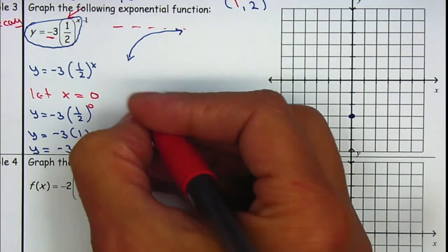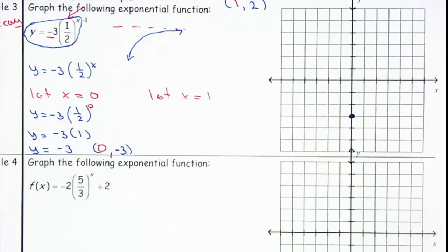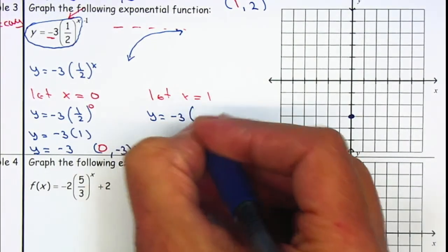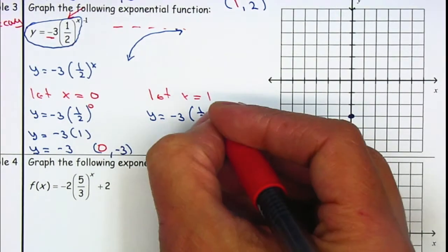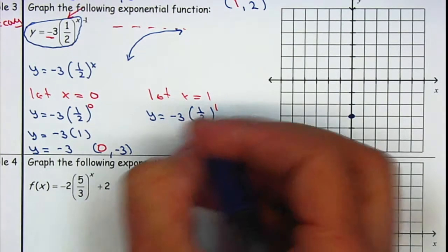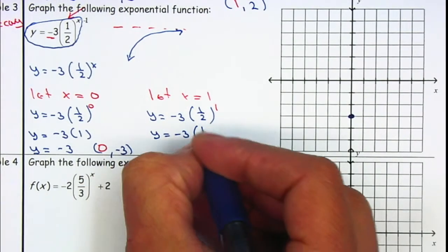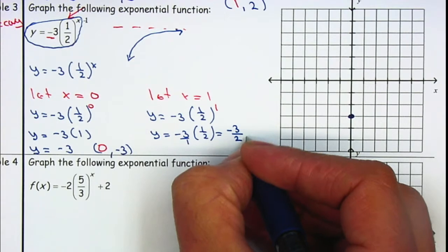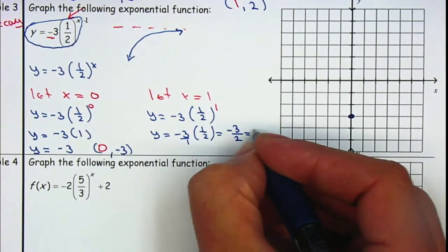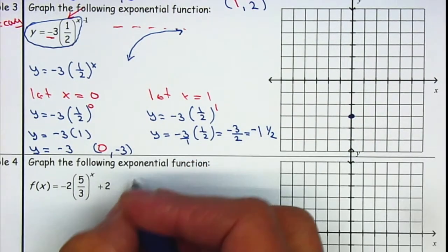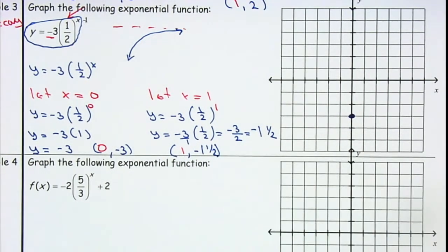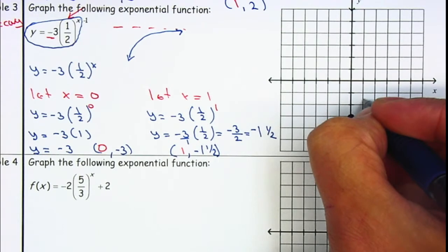Let me find another point. I'm going to let x equal to one. Y is equal to negative three times one-half to the one power. One-half to the one is just one-half. Place over one and multiply across — it gives me negative three over two. Two goes into three once with one left over. So my next point is x equals one, y equals negative one and one-half.